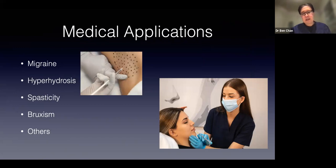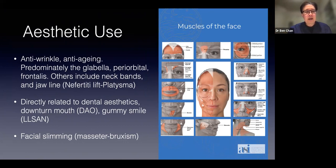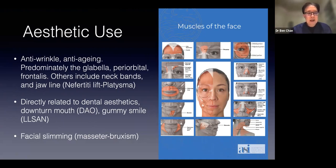In aesthetic use, botulinum toxin is used for anti-wrinkle and anti-aging treatment, predominantly in the glabella, forehead lines, periorbital wrinkles (crow's feet), and frontalis. It is also used for neck bands and jawline, the Nefertiti lift, the downturn mouth (DAO — depressor anguli oris), the gummy smile (LLSAN — levator labii superioris alaeque nasi), facial slimming, and treatment of bruxism and TMJ.